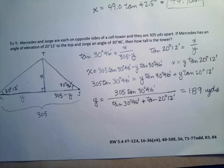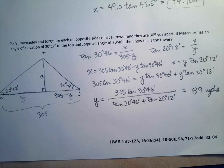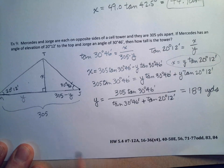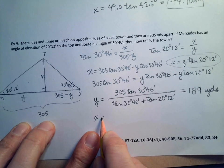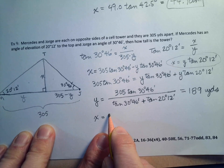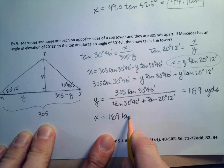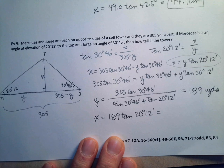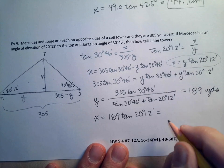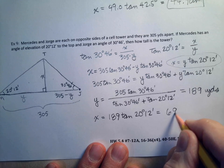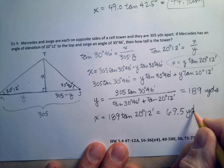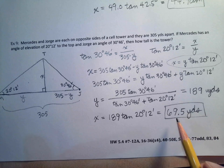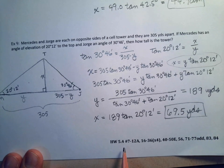Now plug y = 189 into x = y·tan(20°12'): x = 189 × tan(20°12') ≈ 69.5 yards. So the cell tower is approximately 69.5 yards tall. Remember to convert degrees-minutes to decimal degrees in your calculator.